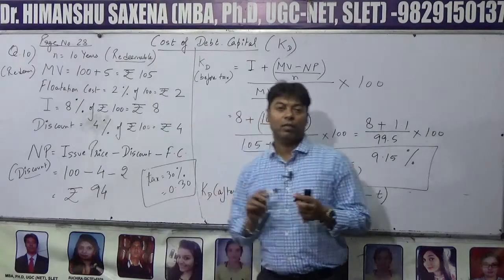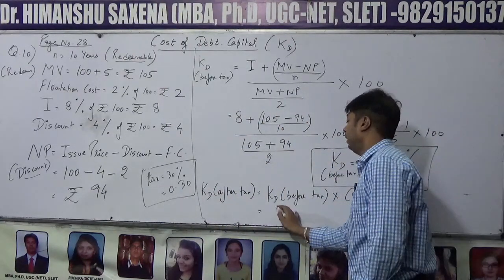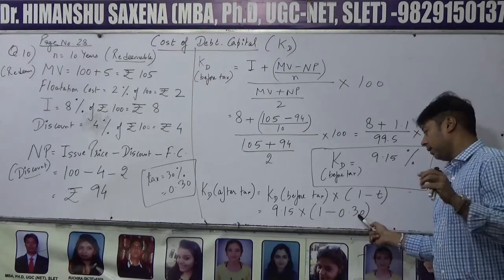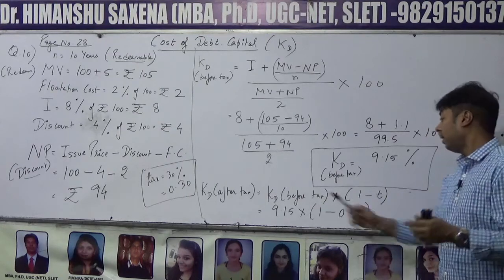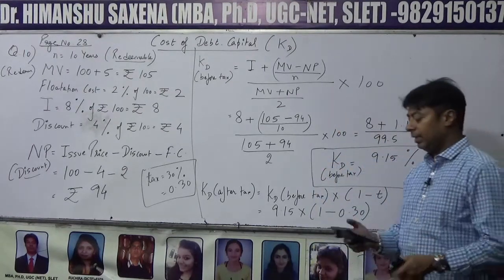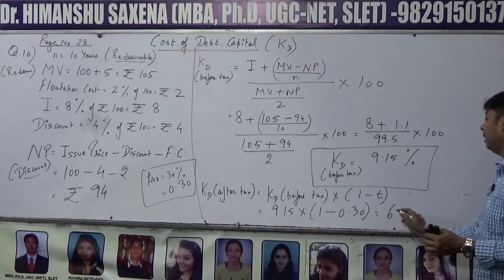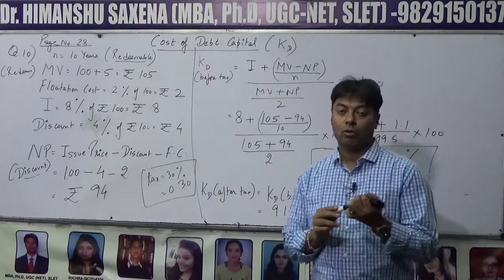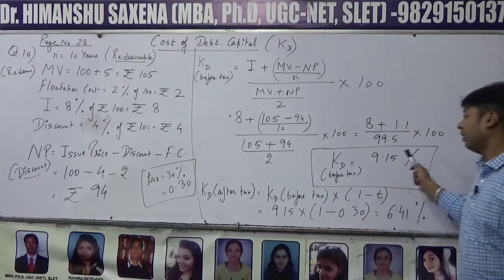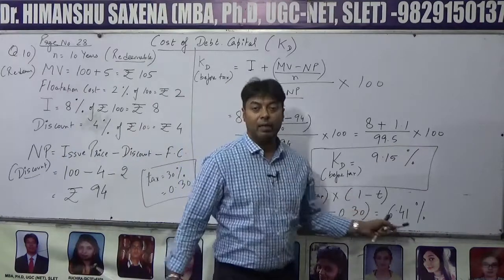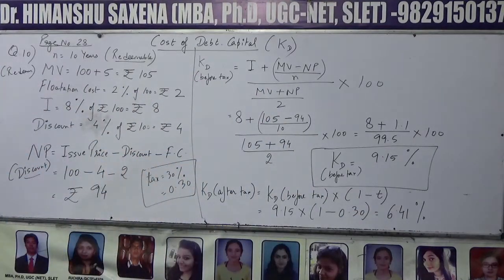30% tax rate को लिखेंगे 0.30. Solve करते हैं: 9.15 × (1 − 0.30) = 9.15 × 0.70 = 6.405, round off करें तो 6.41%. So cost of debt capital before tax = 9.15% और after tax = 6.41%. This is going to be the Kd after tax: 6.41%.